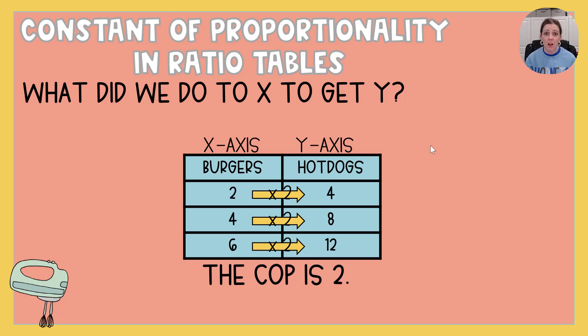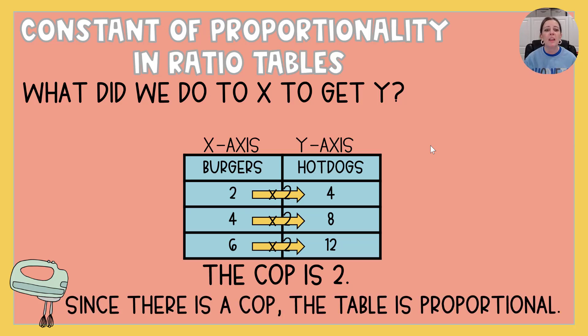That means the COP, the constant of proportionality, is two. I'm doing that constantly. I'm multiplying by two over and over and over. And because this has a constant of proportionality we know that that table is proportional.